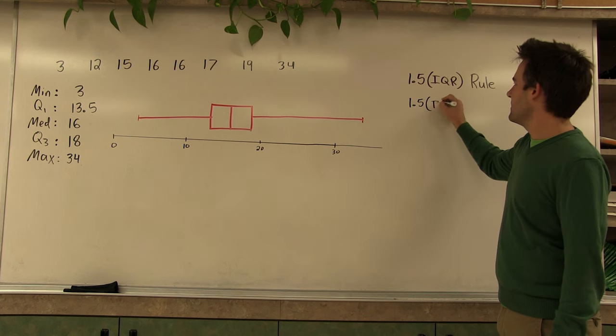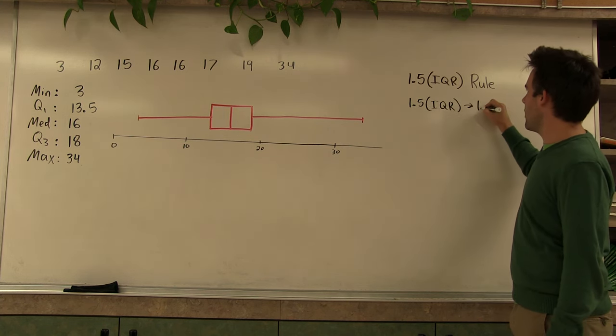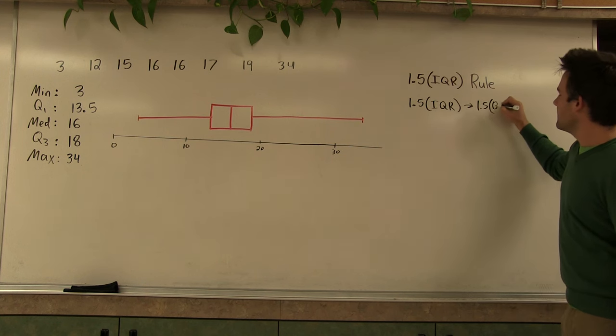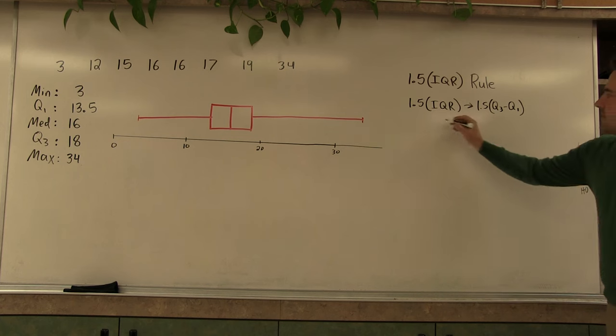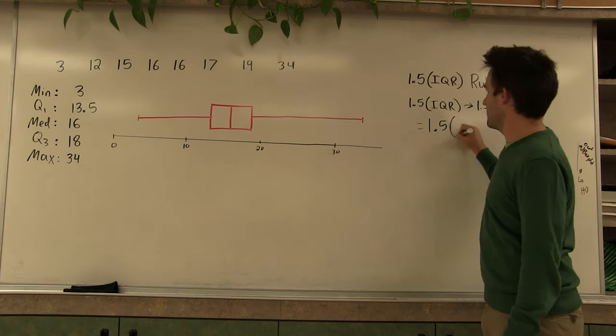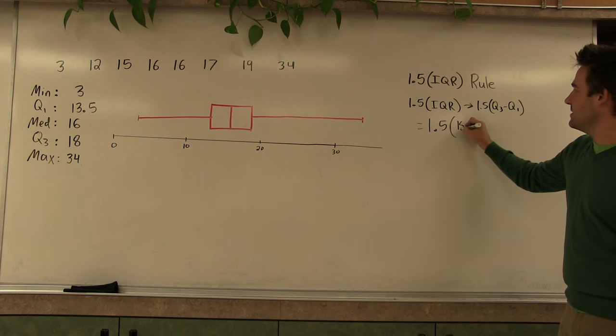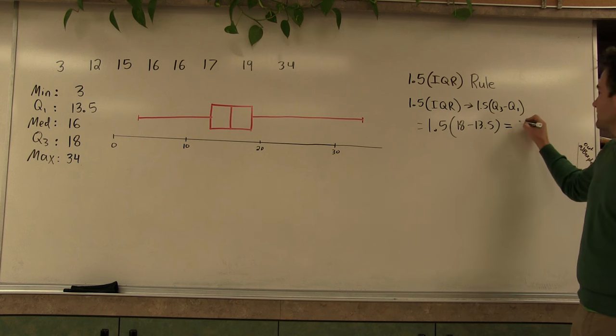1.5 IQR is 1.5 times quartile 3 minus quartile 1. So that equals quartile 3 is 18, quartile 1 is 13.5, and that whole thing turns into 6.75.